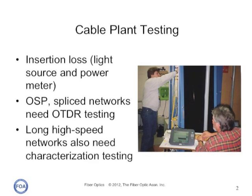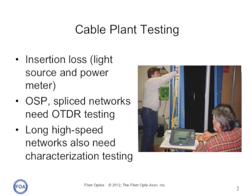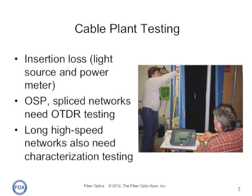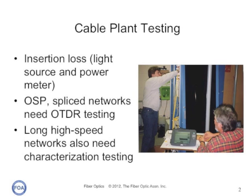Links used for very high speed outside plant networks, typically greater than 10 gigabits per second, will also require fiber characterization: testing for spectral attenuation, chromatic dispersion, and polarization mode dispersion.